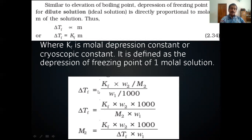ΔT_f = K_f × molality = K_f × (W₂/M₂) × (1000/W₁). Rearranging: M₂ = (K_f × W₂ × 1000) / (ΔT_f × W₁). Based on these equations, we can solve numerical problems.